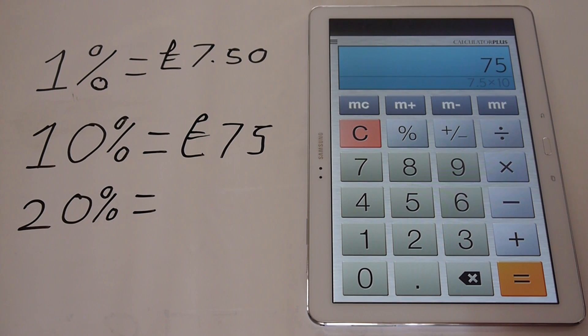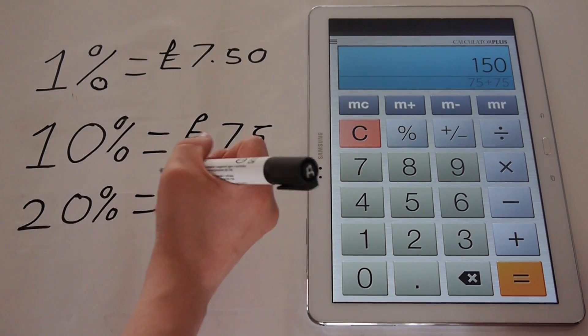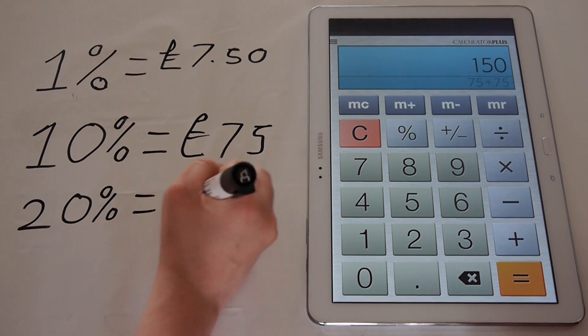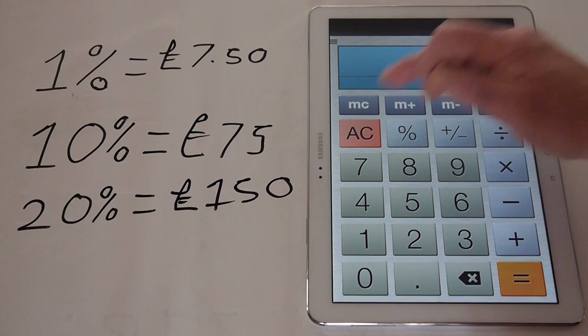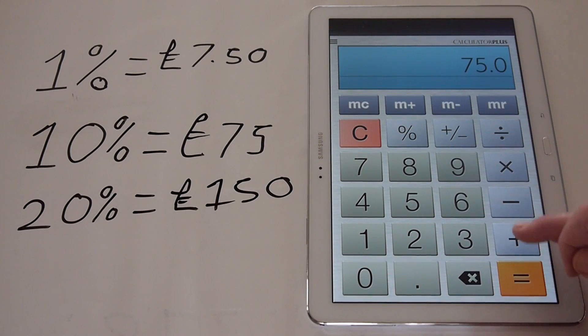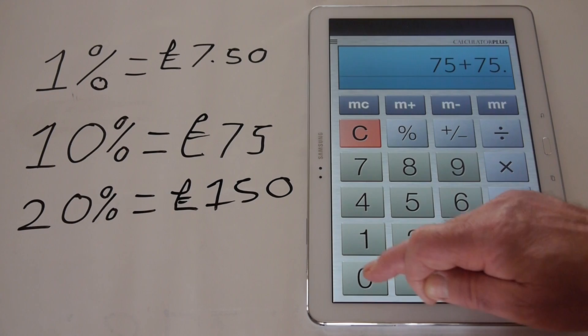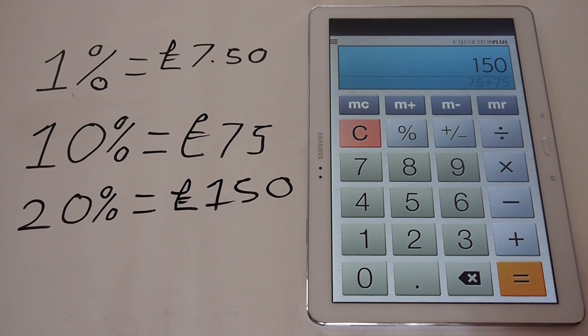So we can add on another £75, which will equal the 20% equals £150. So 20% of £750 is £150. Or we can just get the £75 and add on another £75, which will give us the £150.